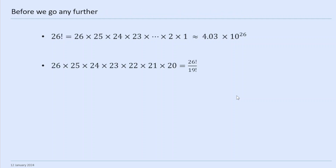Just before we go on, we're going to define some terms. The first is 26 with this exclamation mark — we call it 26 factorial. That is 26 times 25 times 24 times 23... a really big number, approximately 4 times 10 to the 26 — 4 with 26 noughts on. We can write 26 times 25 times 24 times 23 times 22 times 21 times 20 as 26 factorial over 19 factorial. That's a neat way to write it.